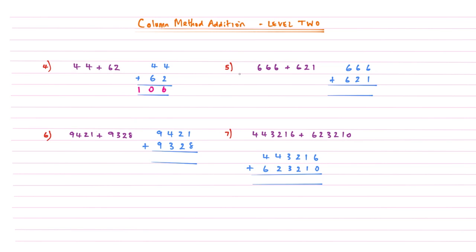Example five: 666 added to 621. Starting from the right-hand side — 6 add 1 gives 7; 6 add 2 gives 8; then two sixes give 12, which is bigger than 10. So we write our two digits accordingly, giving an answer of 1287.